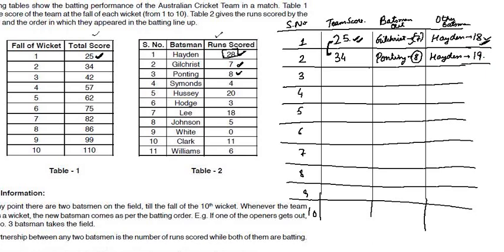The third wicket fell at the score of 42. The difference between the scores is 42 minus 34 = 8. Hayden needs 9 more runs before he gets out, so the next wicket that fell will be Simons. Simons scored 4 runs. With Simons out for 4 and the difference being 8, Hayden must have scored the other 4 runs — giving Hayden 19 plus 4 = 23 runs so far.